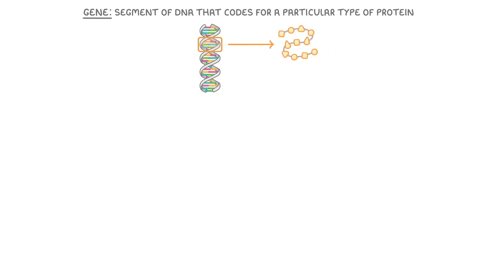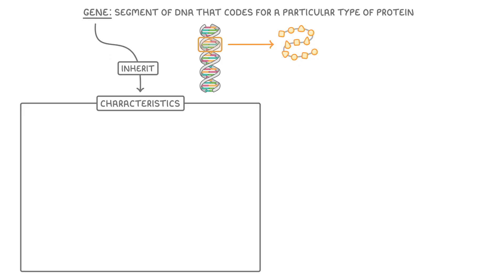Now, all of these terms are related to genes, and remember a gene is just a segment of DNA that codes for a particular type of protein. Together, these genes we inherit determine the characteristics that we go on to develop.